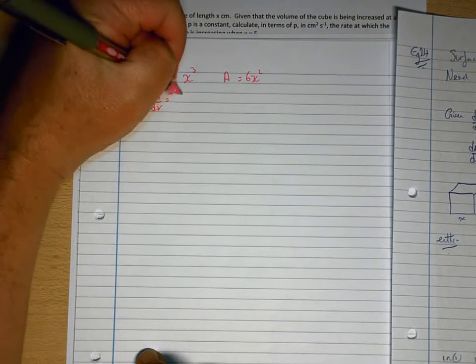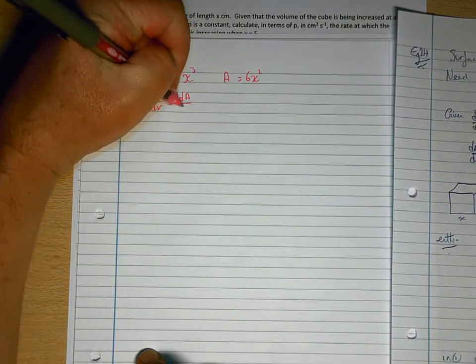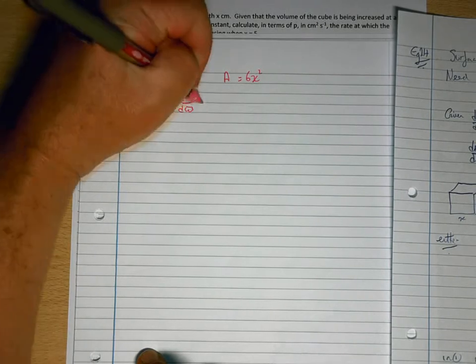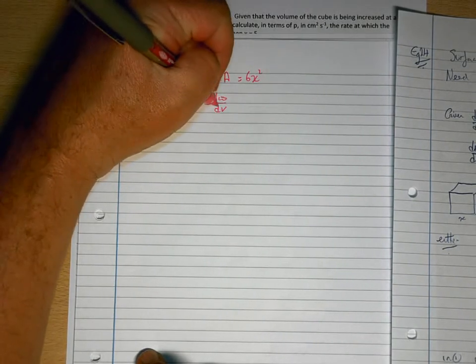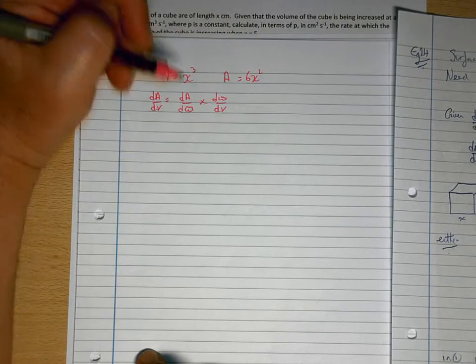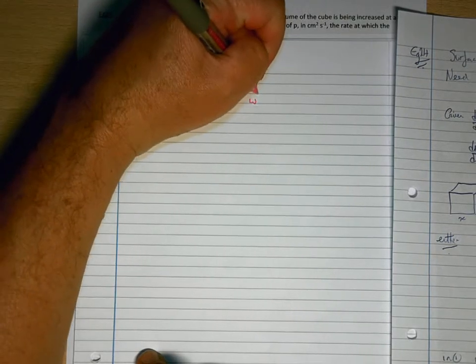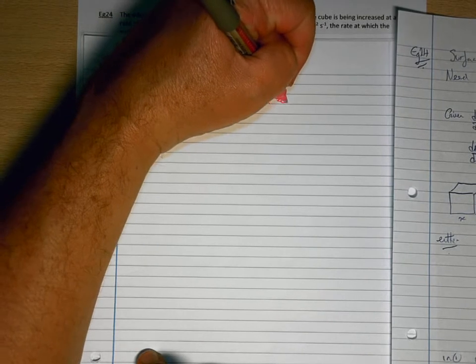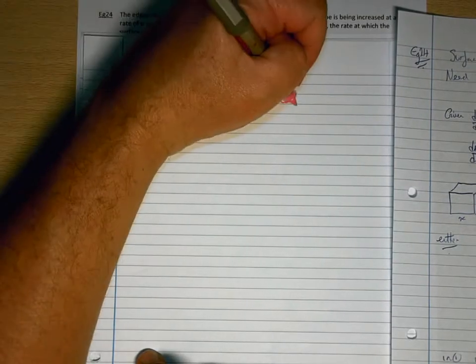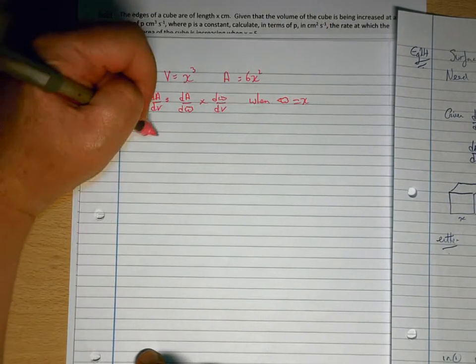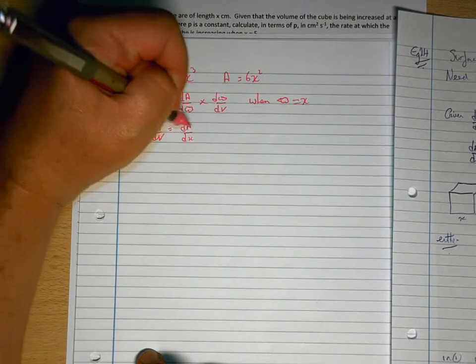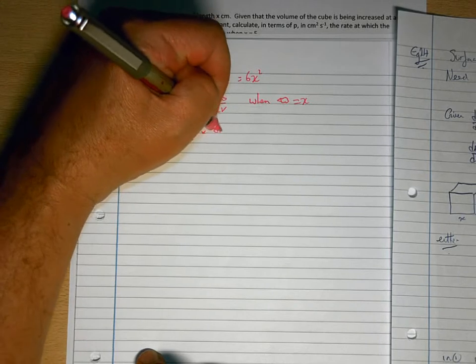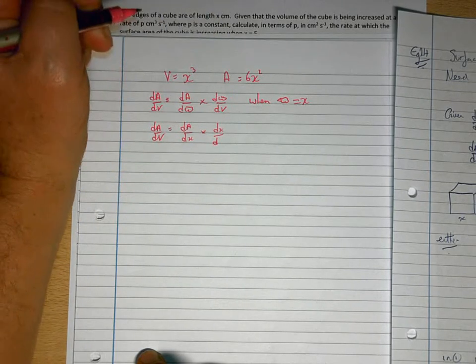then that's going to be dA/d(something) times d(something)/dV. And the third variable, cloud in this case, is going to be x. So dA/dV is dA/dx times dx/dV.